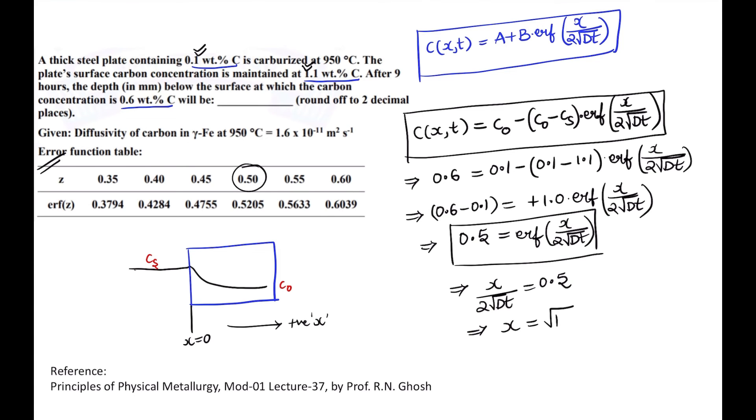In this case I can have it, so what is my D? D is given here: 1.6 × 10⁻¹¹. Time is given in terms of hours, so 9 hours is nothing but 9 × 3600 seconds. Always remember you need to maintain the units consistently. So this will turn out somewhere as 72 × 10⁻⁵ meter. But they are asking in terms of mm, so what you can do is just take 10⁻³ out because 1 mm is 10⁻³ meter.